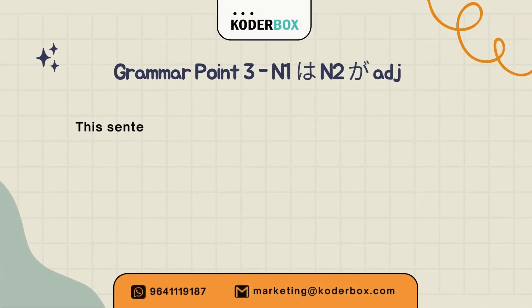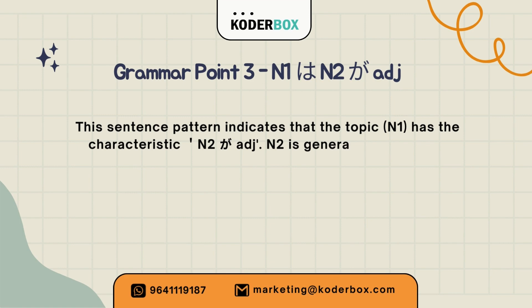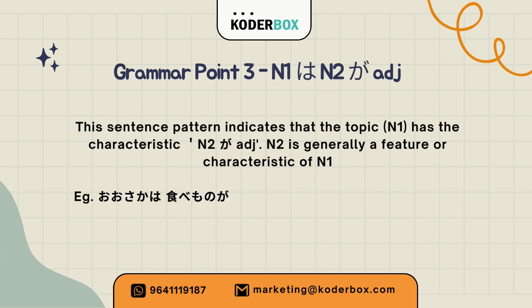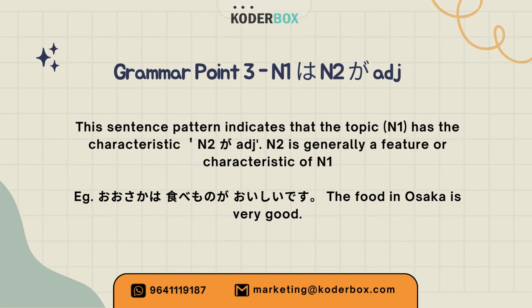Grammar Point Three: Noun 1 wa, Noun 2 ga, Adjective. This sentence pattern indicates that the topic Noun 1 has the characteristic Noun 2 ga Adjective. Noun 2 is generally a feature or characteristic of Noun 1. Example: Osaka wa tabemono ga oishii desu. The food in Osaka is very good.